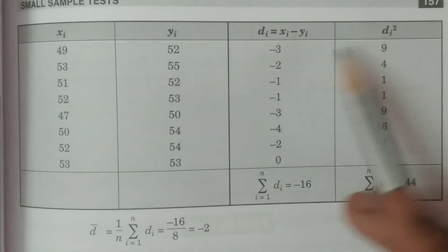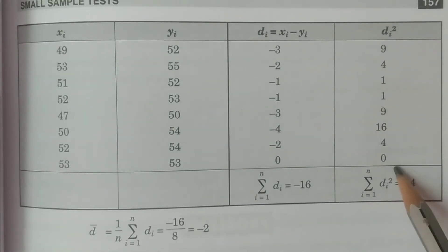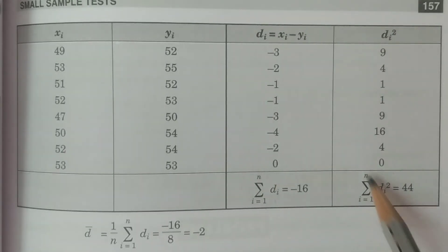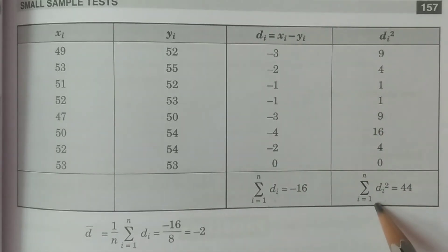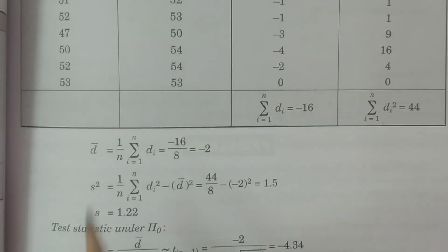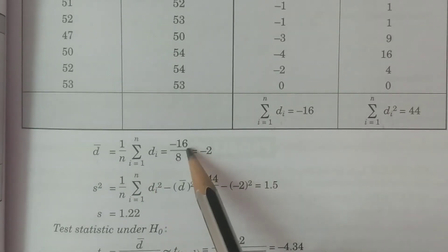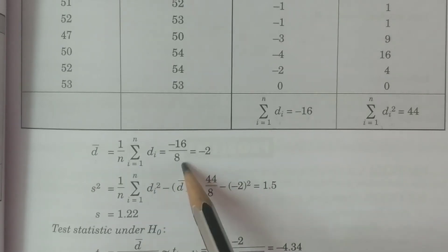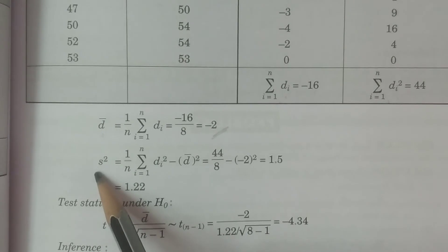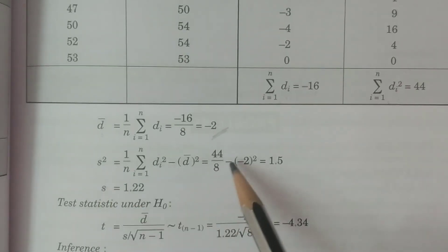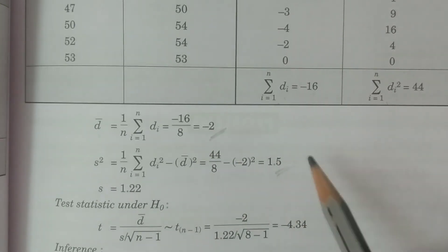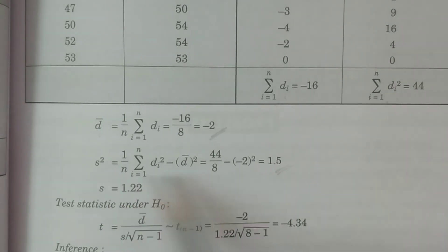Calculate di and di² for all values: (−3)², (−2)², (−1)², etc. Get the totals: Σdi and Σdi². Then d̄ = (1/n) × Σdi = −16/8 = −2. The sample variance s² = (1/n) × Σdi² − d̄² = 44/8 − (−2)² = 1.5. Therefore s = √1.5 = 1.22.